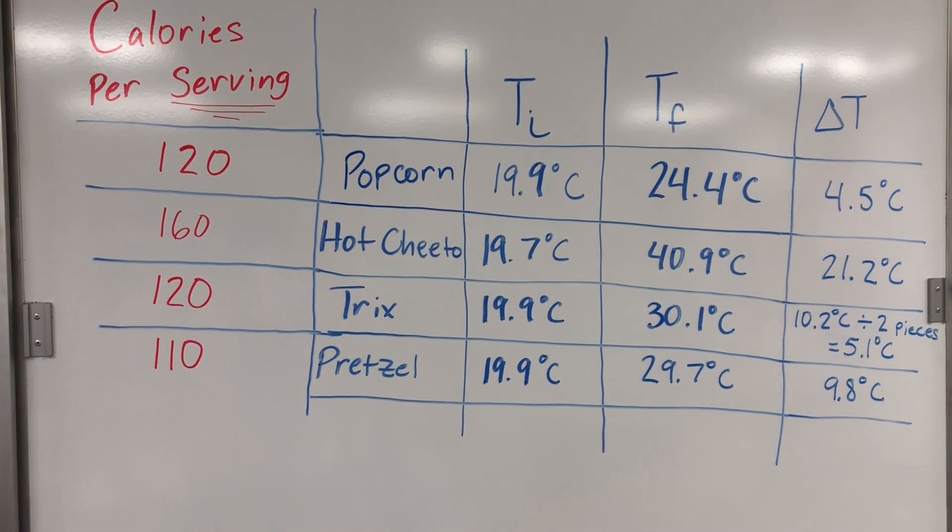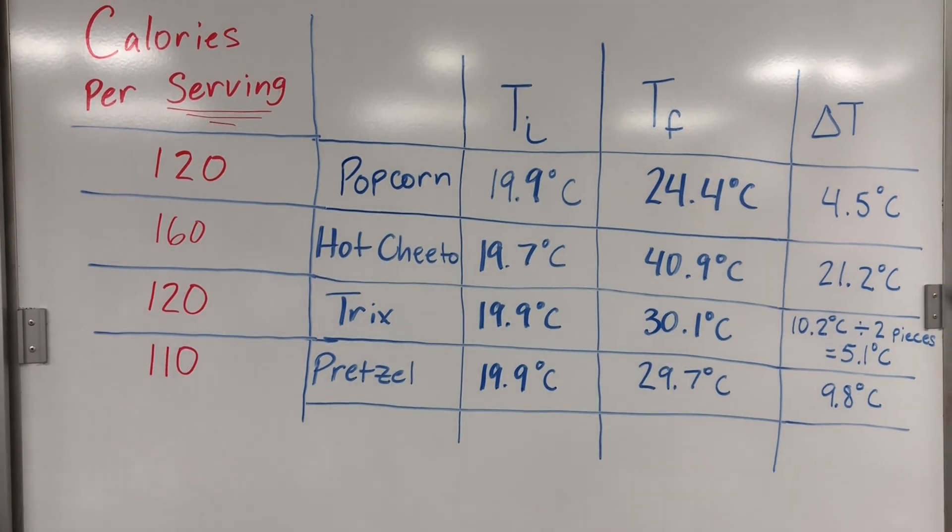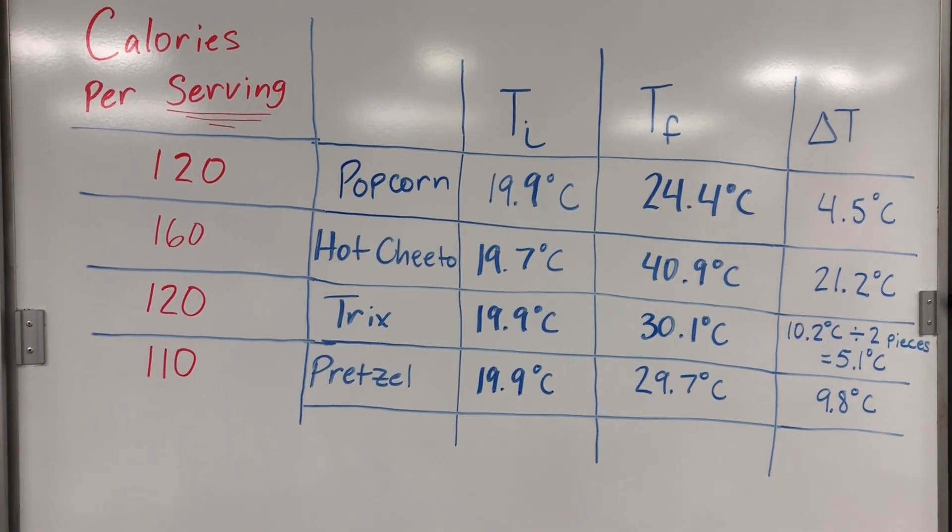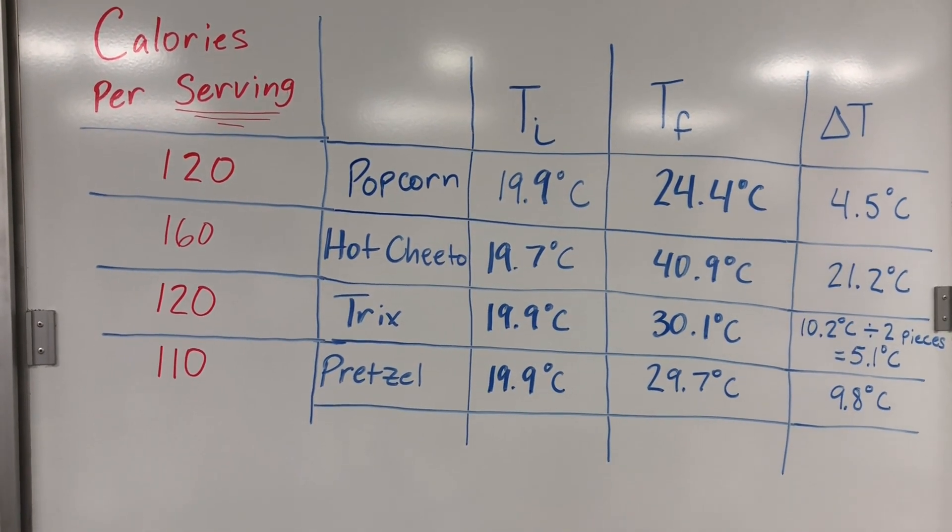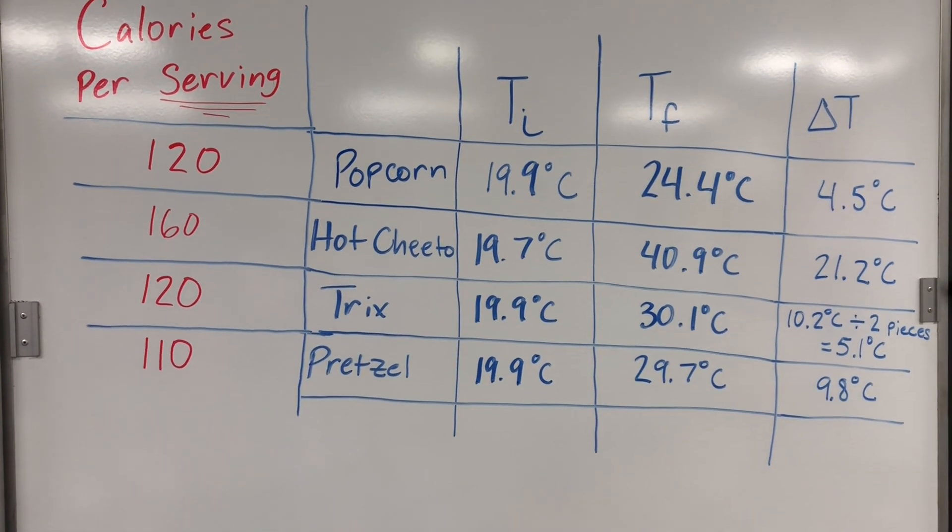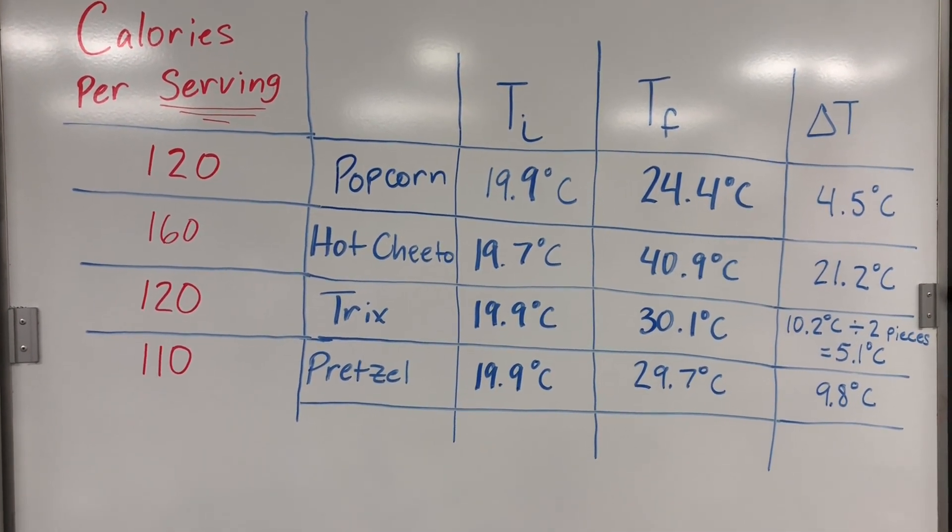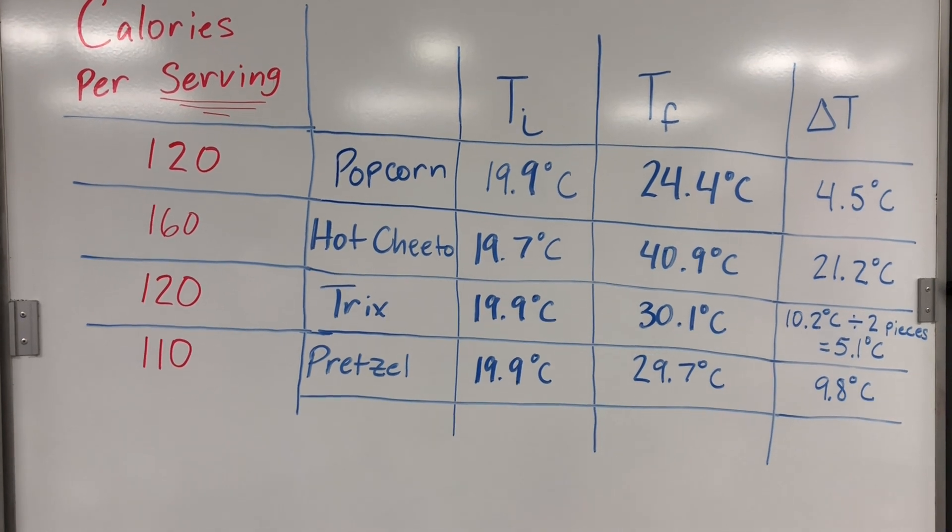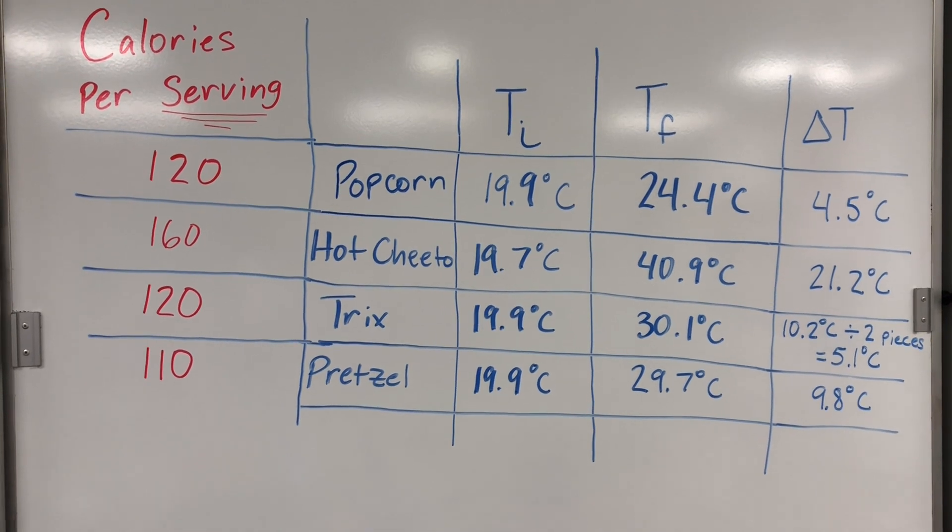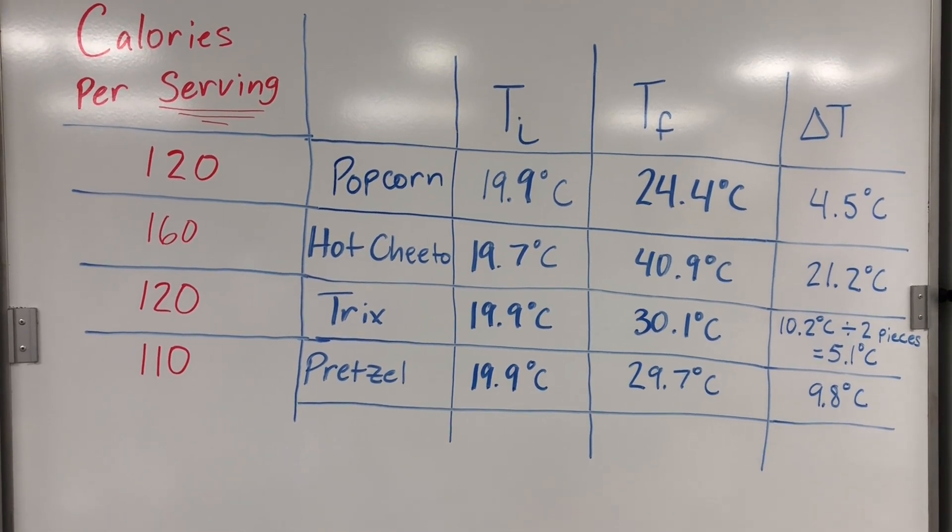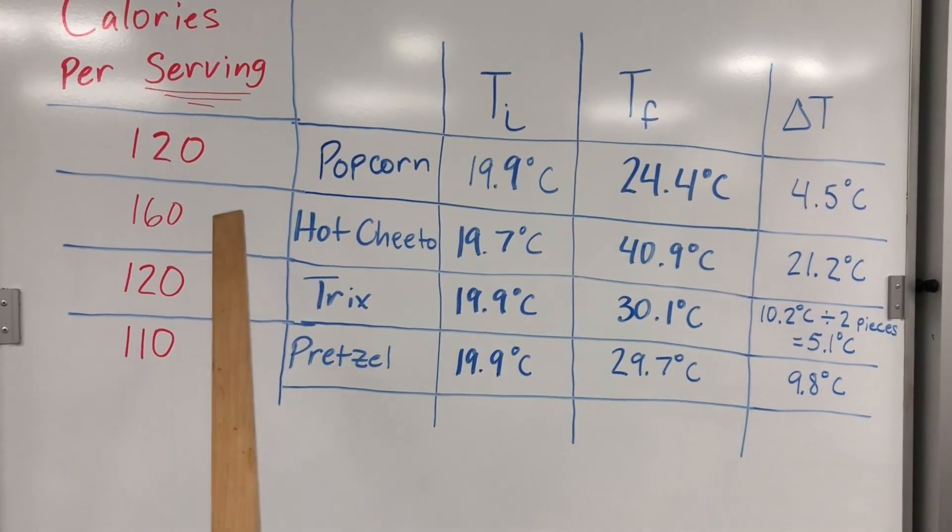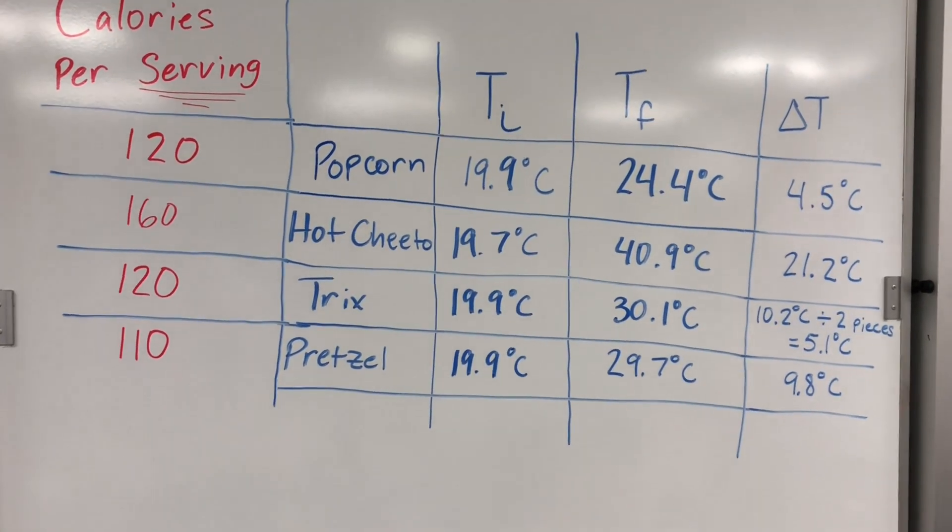So a couple things we should be thinking about when we are talking about calories per serving—that's usually based on how many pieces of something the producer thinks we should be eating. So if somebody thinks that 20 pieces of popcorn is a serving and two pieces of Cheetos is a serving, that's obviously going to be very, very different between the amount of energy in one Cheeto and the amount of energy in one piece of popcorn. But we are in fact seeing here that Hot Cheetos have the greatest amount of energy and the most amount of calories per serving, which makes sense. But again, we should be comparing how much of the substance we're actually burning, which wasn't the same across the board.